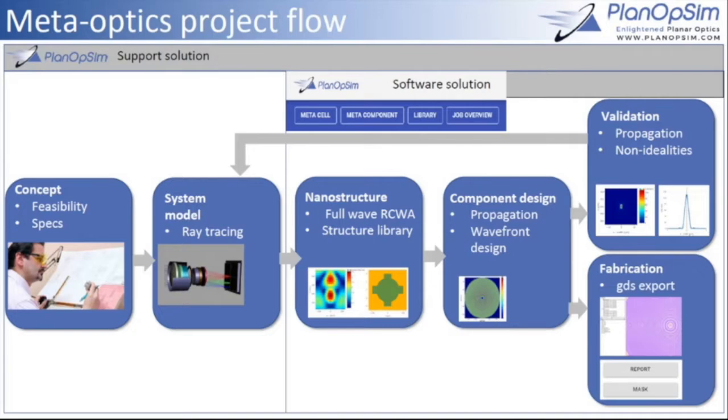And at that moment, we can actually start the meta-surface in earnest within the software solution, first by building a library of nanostructures, which are sub-wavelength, so we use full wave solvers for that, then taking those structures into components and replicating target wavefronts that came from the ray tracing design.